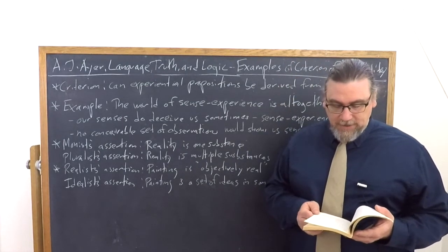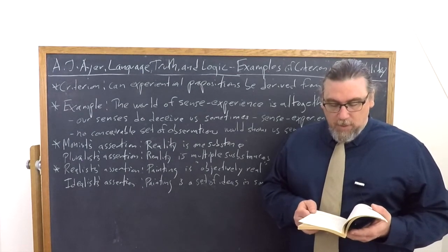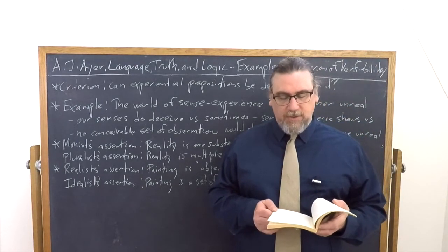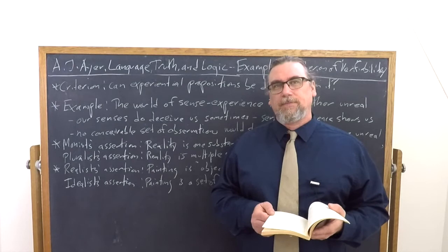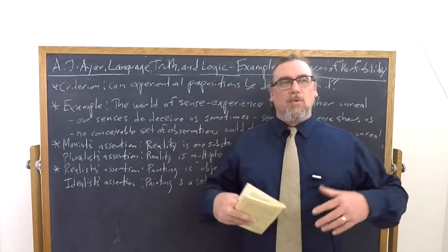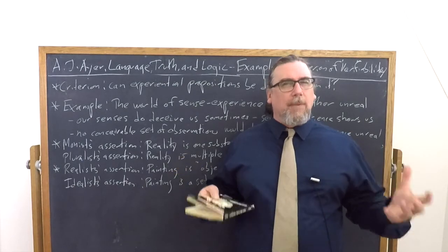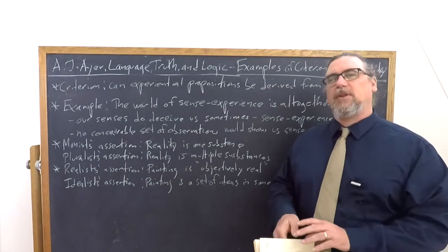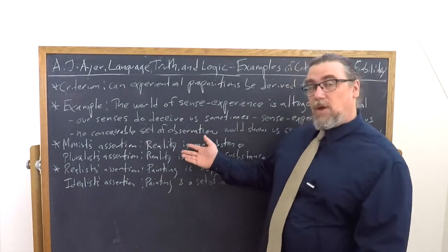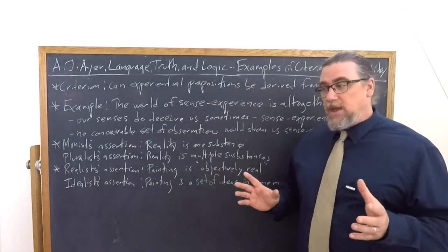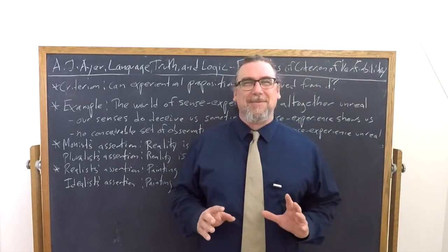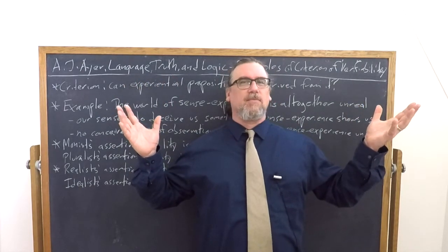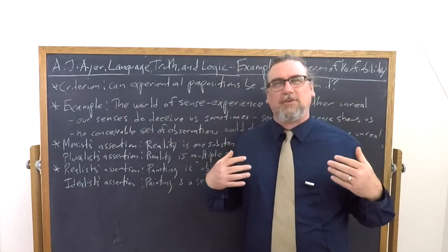He goes on and he says that it's admitted both by monists and pluralists that it's impossible to imagine any empirical situation which would be relevant to the solution of their dispute. You can provide all sorts of intellectual reasonings for it, but there's no observations that you can make that would lead you to say that there are indeed multiple substances. Why not? Because you might say, well, the pluralist is actually at an advantage here. They can say, well, look, here's, if we're going to pretend to be G.E. Moore, here's one hand, here is another.